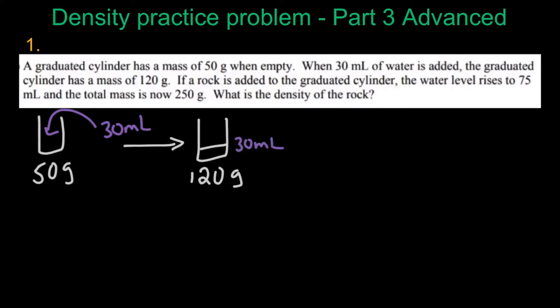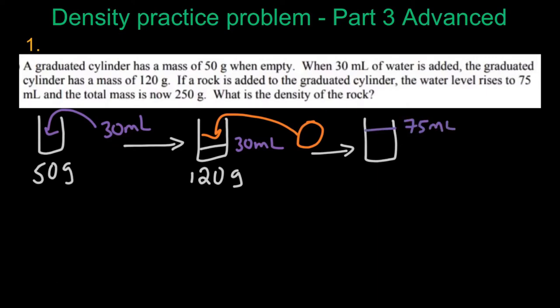Now a rock is added or dropped inside the graduated cylinder. The water level will rise to become 75 milliliters after we drop the rock. The water level rises to 75 milliliters and the total mass is 250 grams. What is the density of the rock?